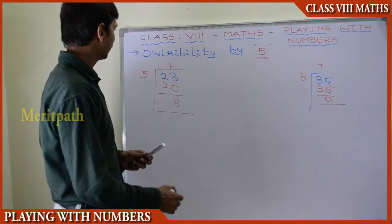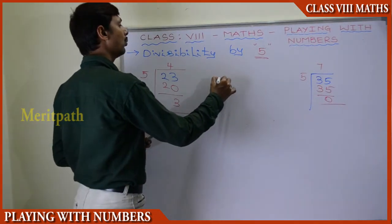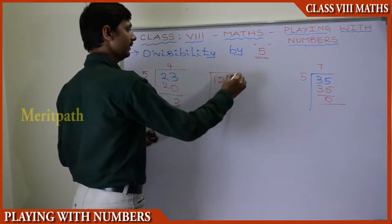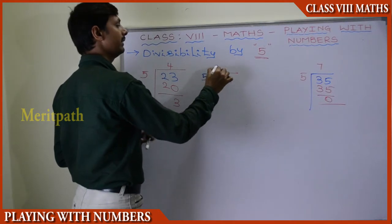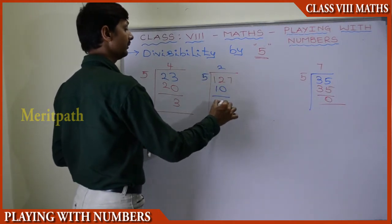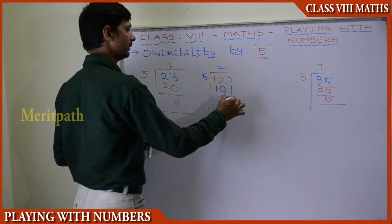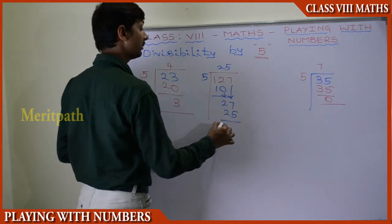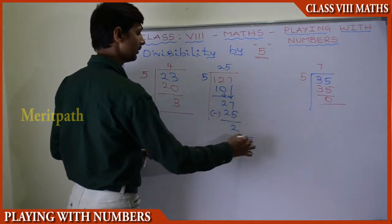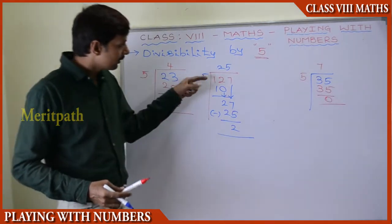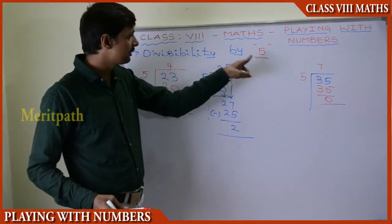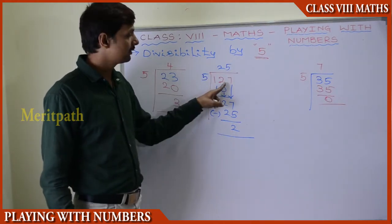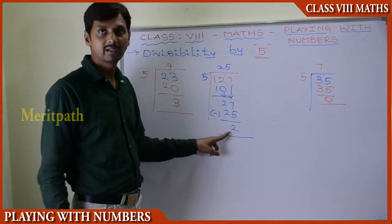Let us take another number: 127. Dividing by 5 — 5 into 12 goes 2 times, 2 times 5 is 10, subtract to get 2. Bring down 7 to make 27. 5 into 27 goes 5 times, 5 times 5 is 25, and after subtraction we get 2. So 2 is the remainder. Therefore, 127 is not divisible by 5 because 2 is the remainder.